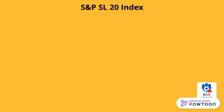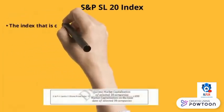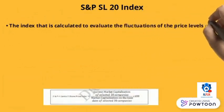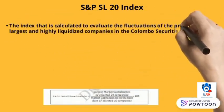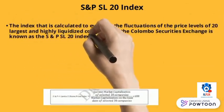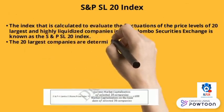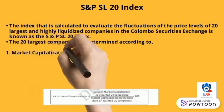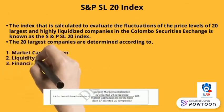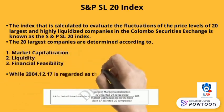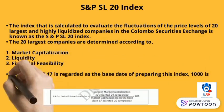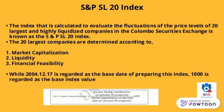The S&P SL 20 Index is the index calculated to evaluate the fluctuations of the price levels of the 20 largest and highly liquidized companies in the Colombo Securities Exchange. The 20 largest companies are determined according to market capitalization, liquidity, and financial feasibility. December 17, 2004 is regarded as the base date, and 1000 is regarded as the base index value.